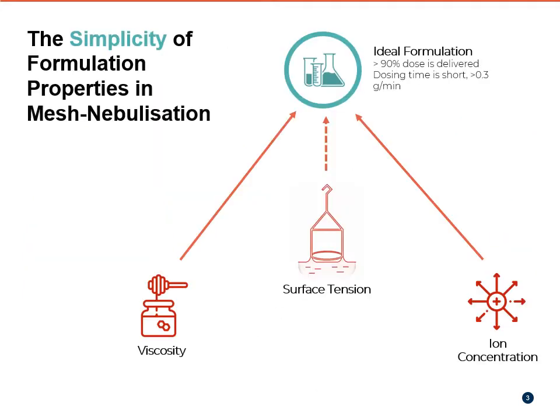Part of this difficulty is in assessing how the physical-chemical properties of the fluid formulation directly impact the output rate. Current research suggests three physical properties — viscosity, ion concentration, and surface tension — to some extent as key influences of the output rate itself. Broadly, this research focuses on each property independently and illustrates general trends.